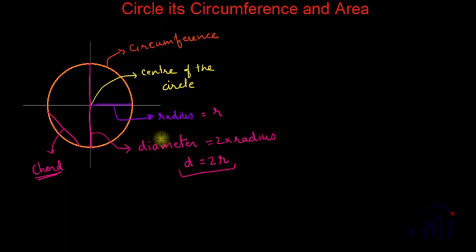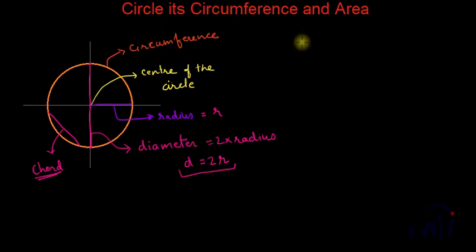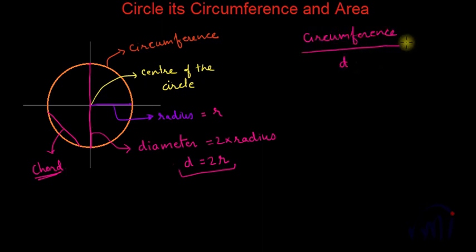If you draw a circle of any diameter, there is a special relation between the circumference — the length of the boundary of the circle — and the diameter. They always maintain a constant ratio, the ratio of circumference to diameter. This ratio is always constant and is known as pi, whose value is roughly 22/7.